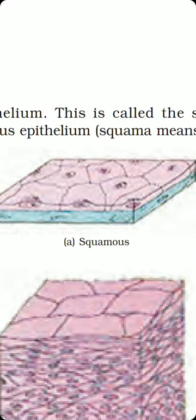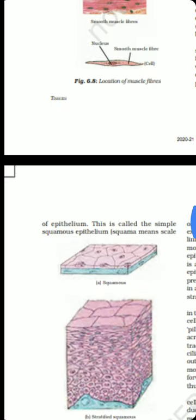This scaly appearance is why the epithelium is named simple squamous epithelium. In the figure, you can see pinkish color scale-like cells that are supported by a blue-colored membrane. These cells form the lining of blood vessels and alveoli.